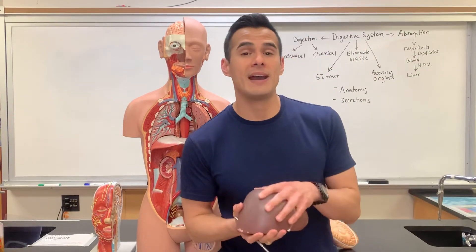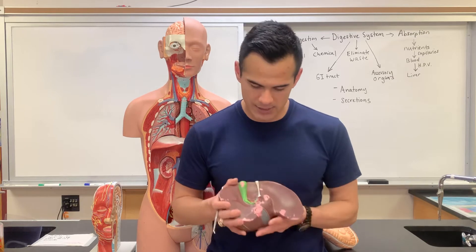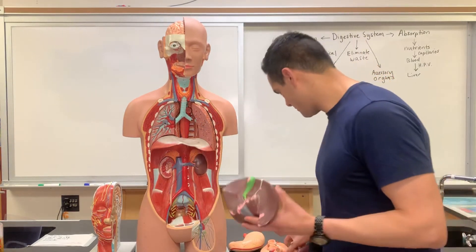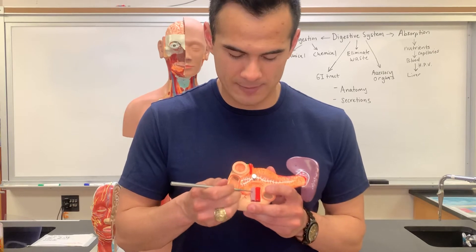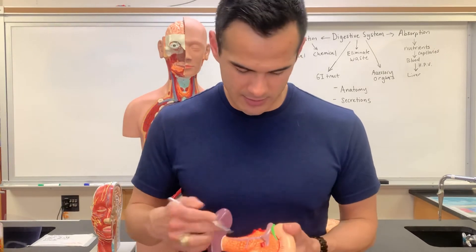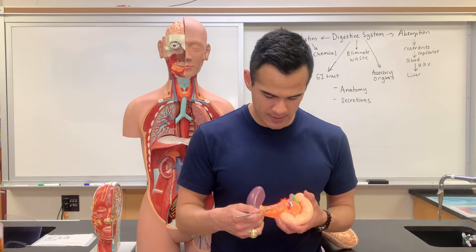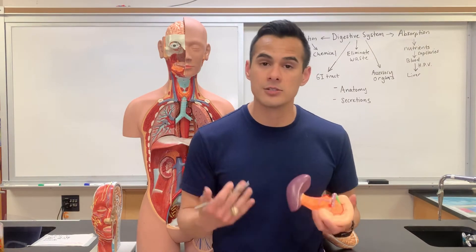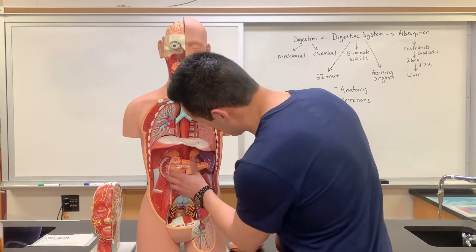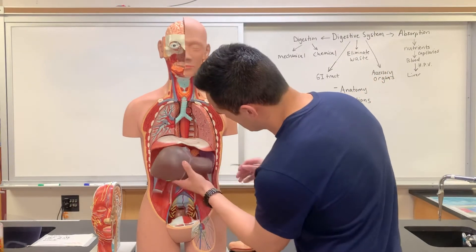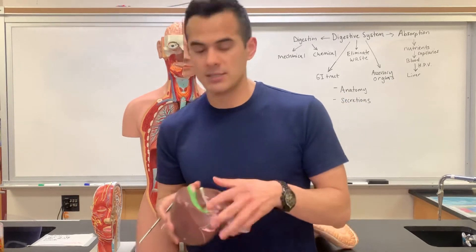In order to get nutrients back to the liver we pass through what's known as the hepatic portal vein. The hepatic portal vein receives blood from a variety of structures — from the spleen, from the pancreas, and also from the intestines. You can see it here on the back side, coming all the way up and then getting processed in the liver.